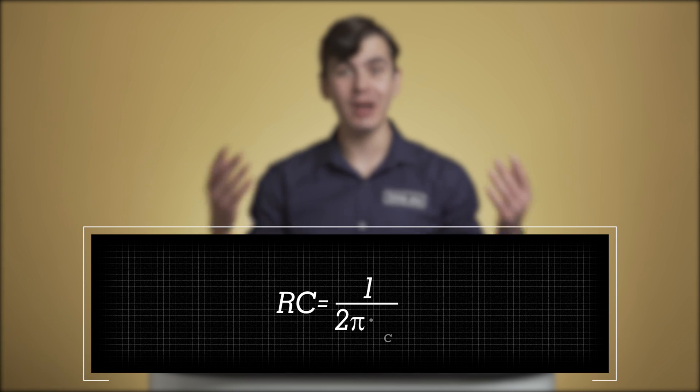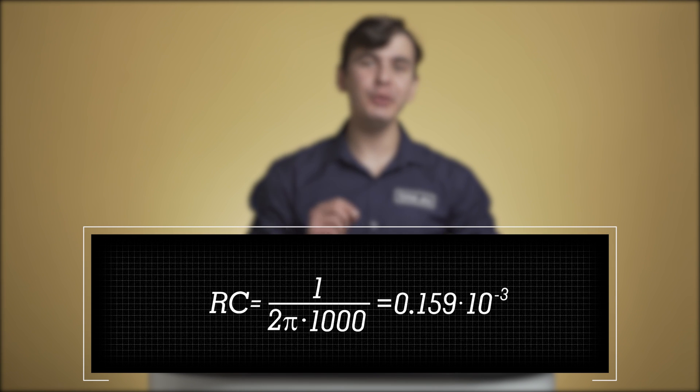All we have to do now is to pick our RC couple to be equal to 0.159 times 10 to the minus 3. In an ideal universe, you can just plug in any two numbers that will give you the result.